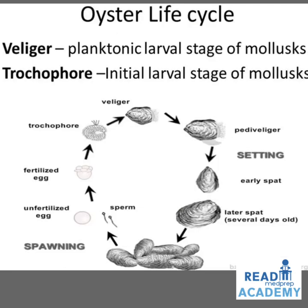The oyster life cycle is shown here. The veliger is a planktonic larval stage of mollusks, and the trochophore is the initial larval stage. Oysters during spawning produce sperm and unfertilized eggs which get fertilized to form the trochophore larva. This slowly develops into a veliger larva, which is planktonic, and later develops further into a veliconcha larva, then an early spat, and finally matures into a late spat after several days.